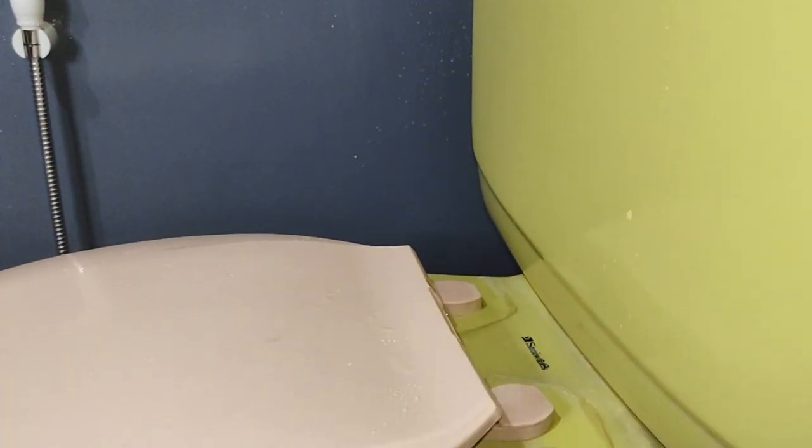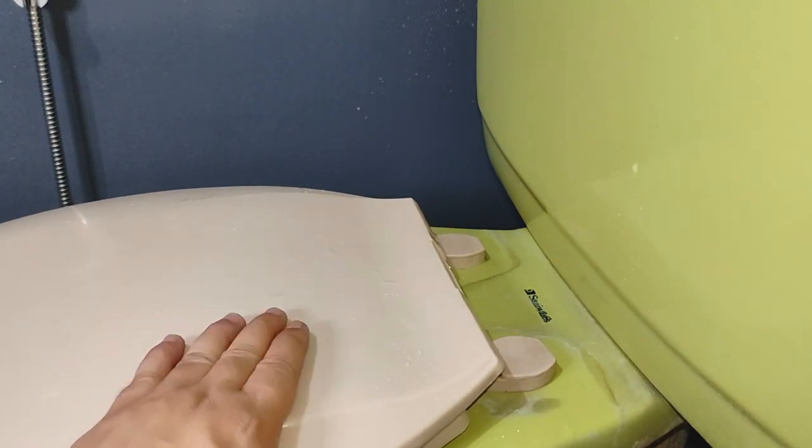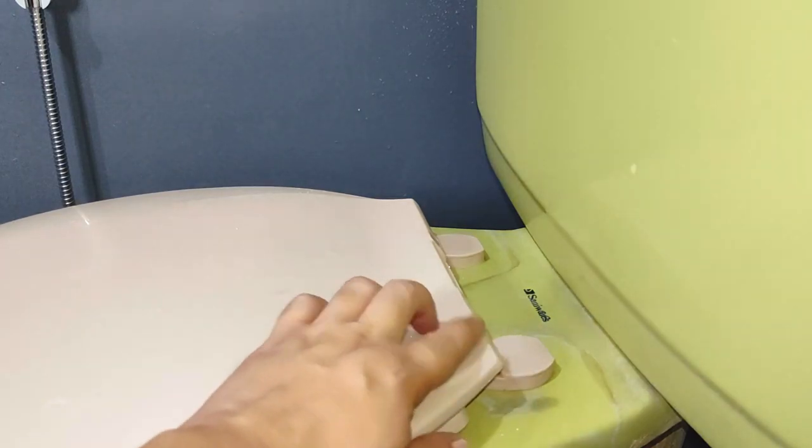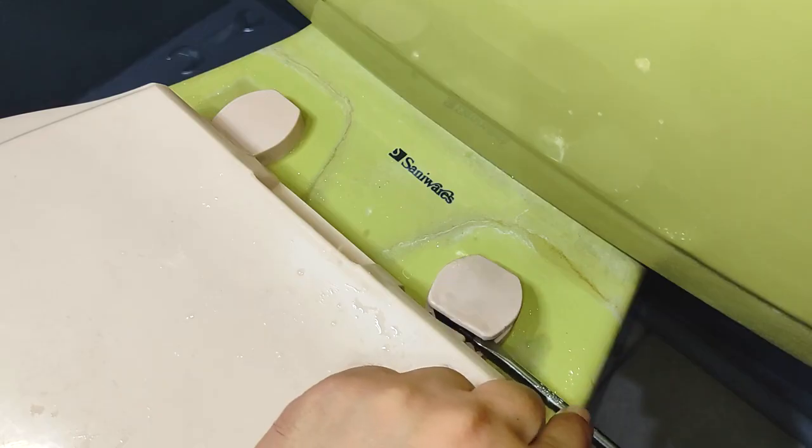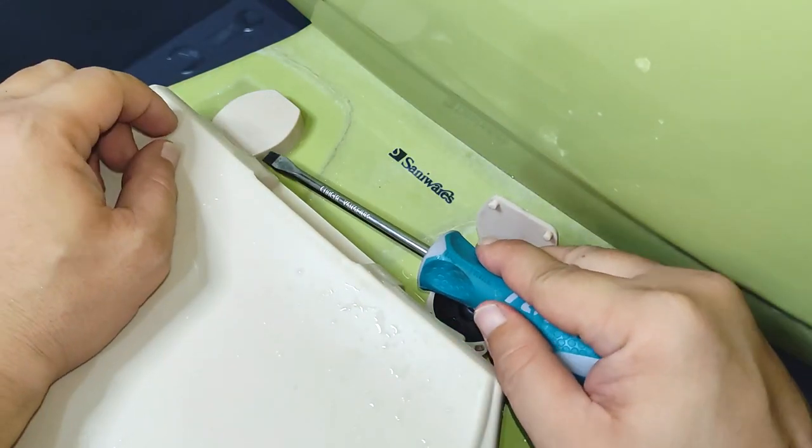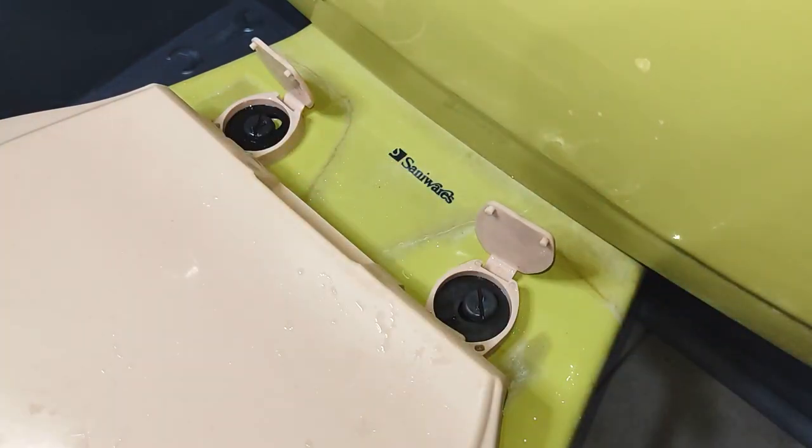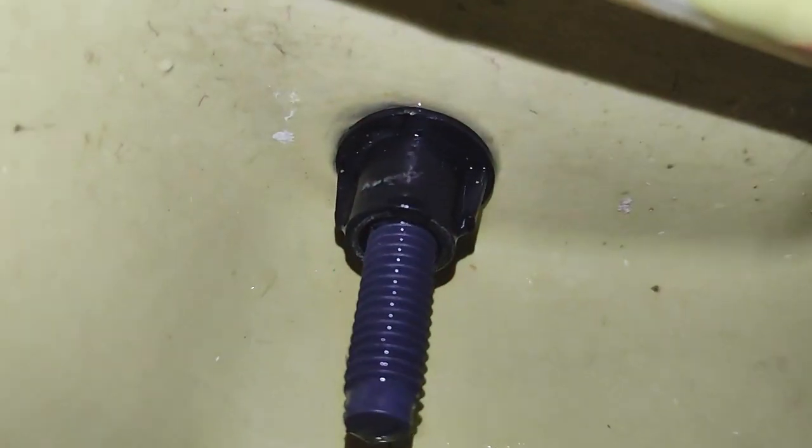Meanwhile, it's time to remove this toilet cover and seat. And this is done by simply removing two bolts here and here. Note that underneath are nuts that hold the bolts in place.